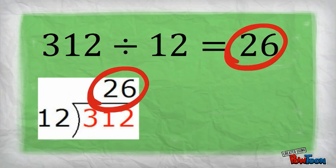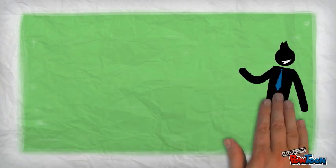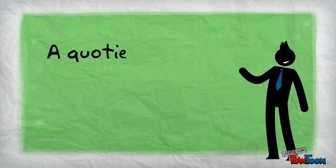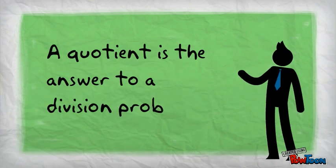26 is the result of this division problem. It is the quotient. A quotient is the answer to a division problem.